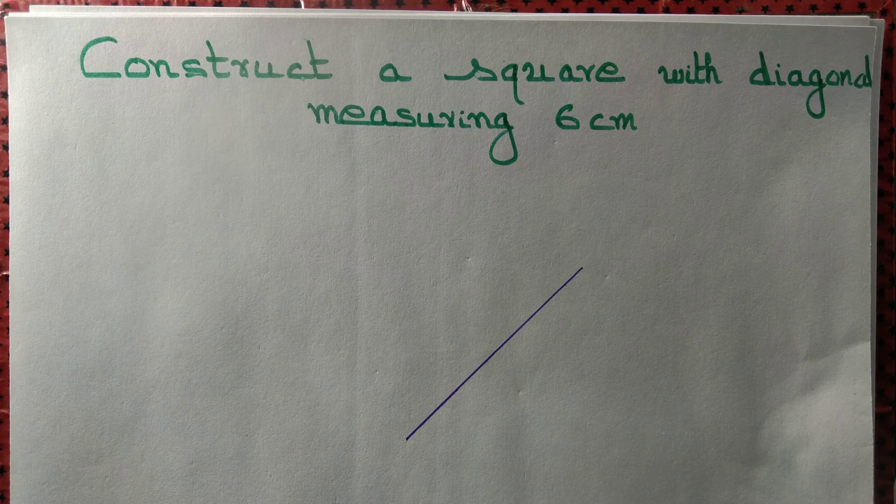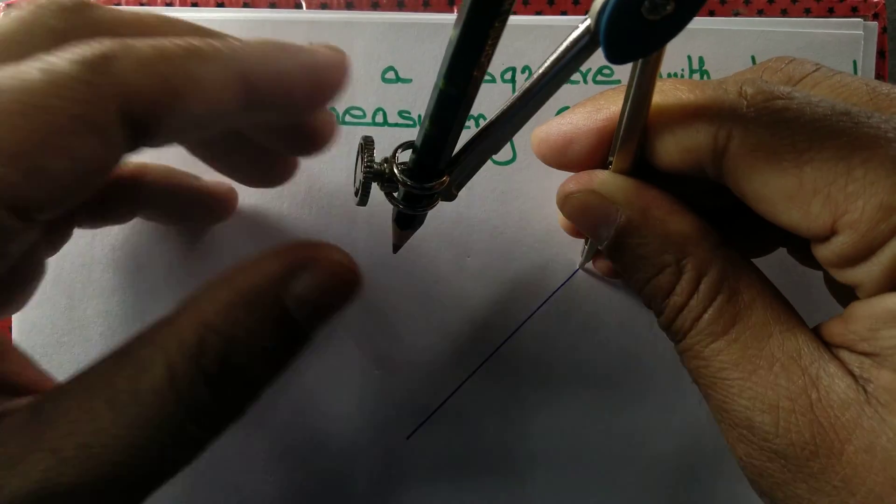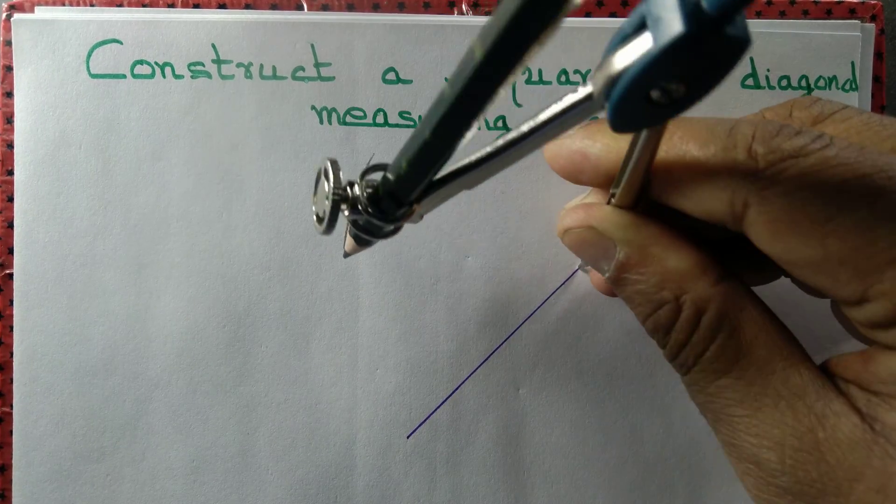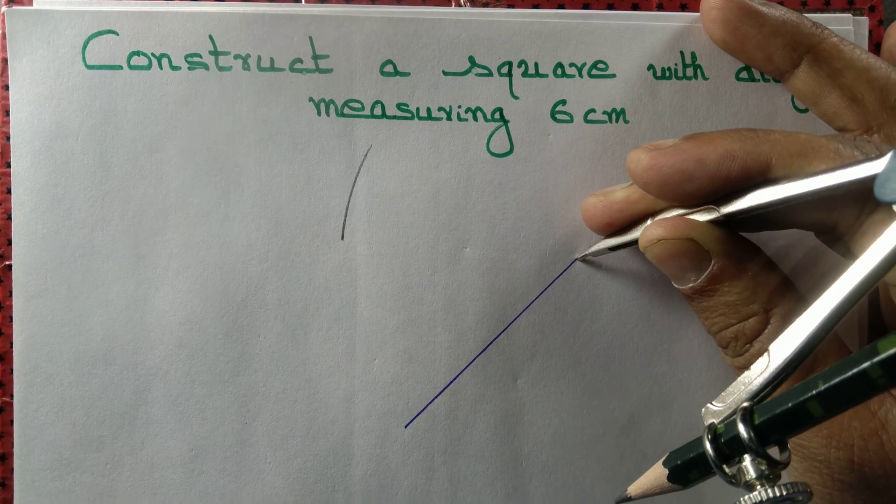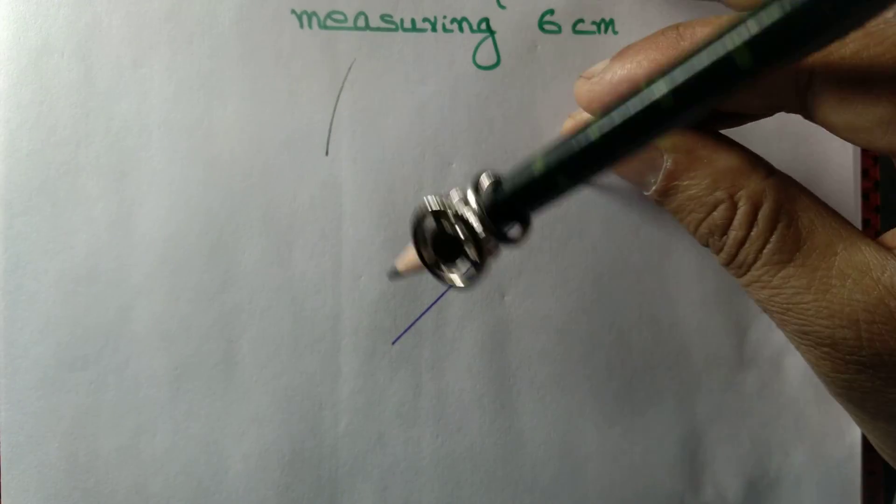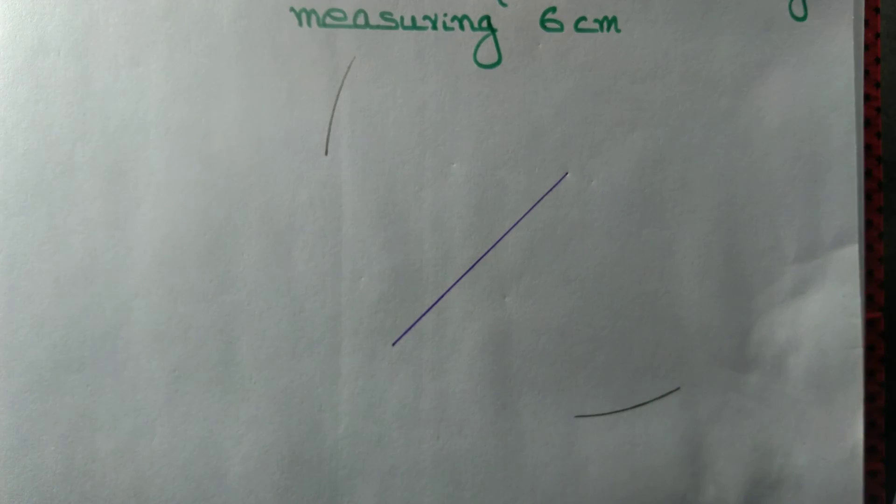We take a compass and draw a perpendicular bisector of the diagonal. In order to draw a perpendicular bisector, we draw 2 arcs, 1 above the diagonal, 1 below the diagonal, from 1 end point of the diagonal.